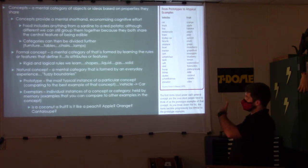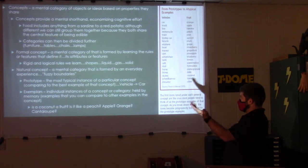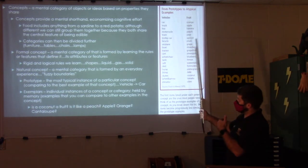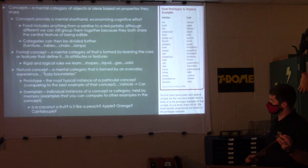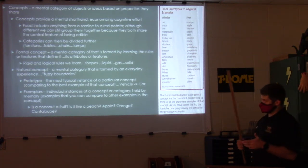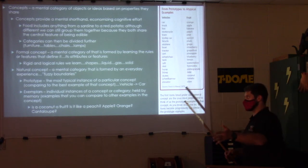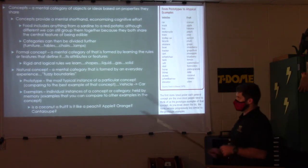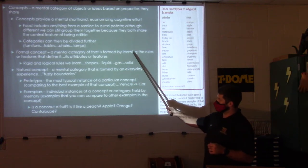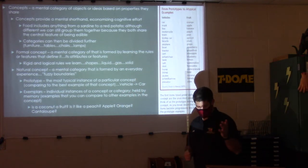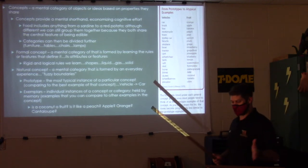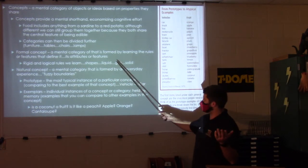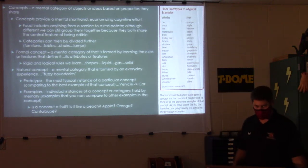Concepts provide a mental shorthand — almost like a heuristic, which is a mental shortcut. Food includes anything from a sardine to a red potato; although different, we can group them together because they share the central feature of being edible. Categories can be divided further — furniture includes tables, chairs, lamps. A formal concept is a mental category formed by learning the rules or features that define it. Its attributes are rigid and set — if something meets those features, it is that thing. Shapes, liquid, gas, solid — if it meets the standards, it is that thing.